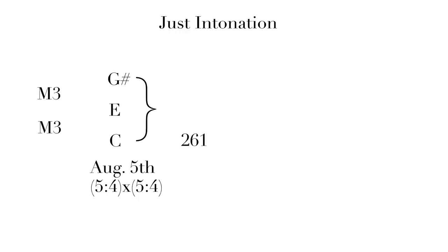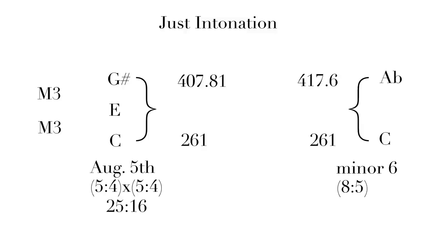So, if C is a frequency of 261 and we multiply 5 to 4 times 5 to 4, or 25 to 16, we find a G sharp whose frequency is 407.8125.